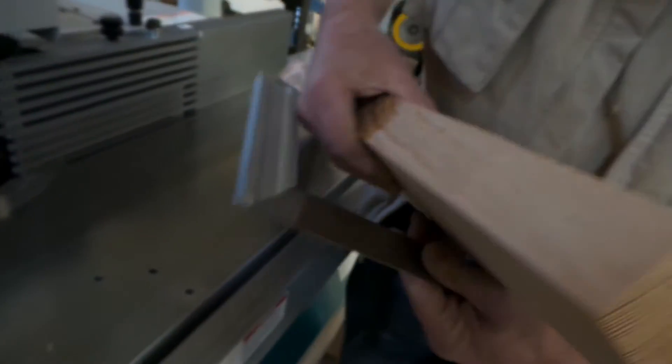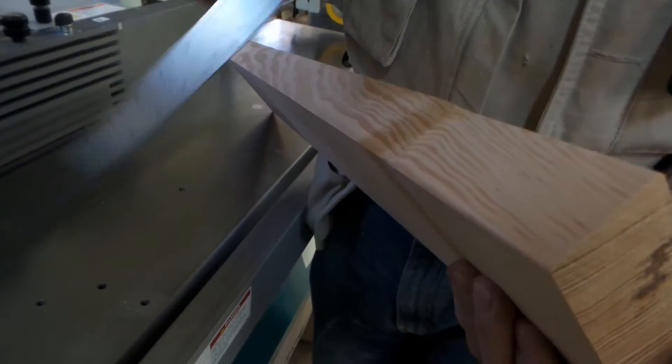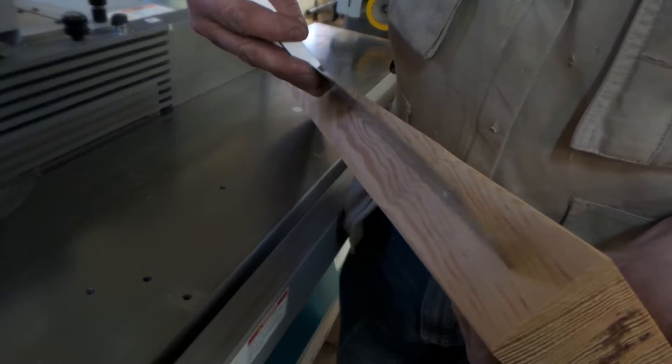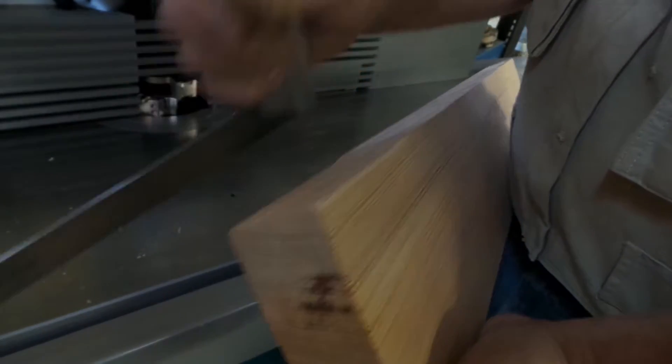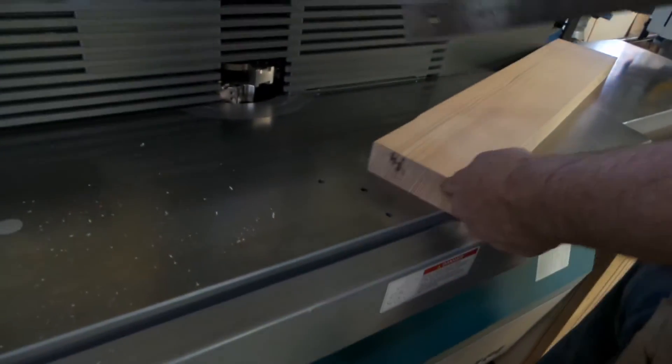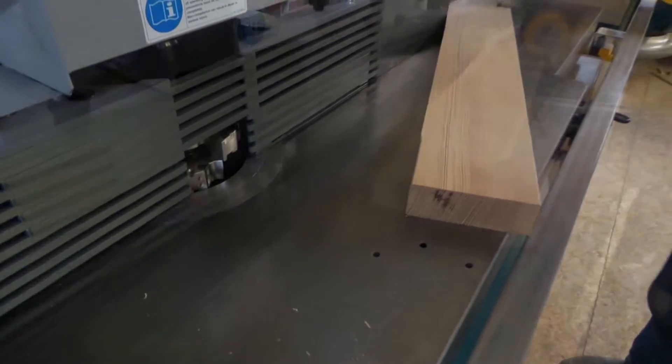You can see that we've removed a millimeter and putting the radius both sides. That gives us a very nice clean edge. We'll set the feeder up and do the entire length up here now.